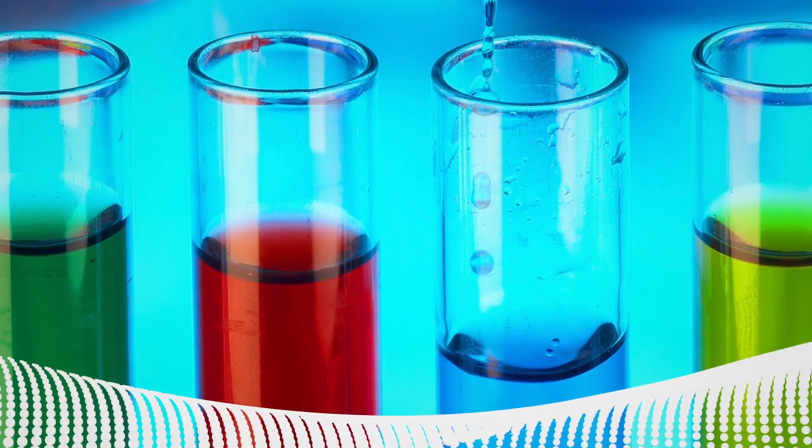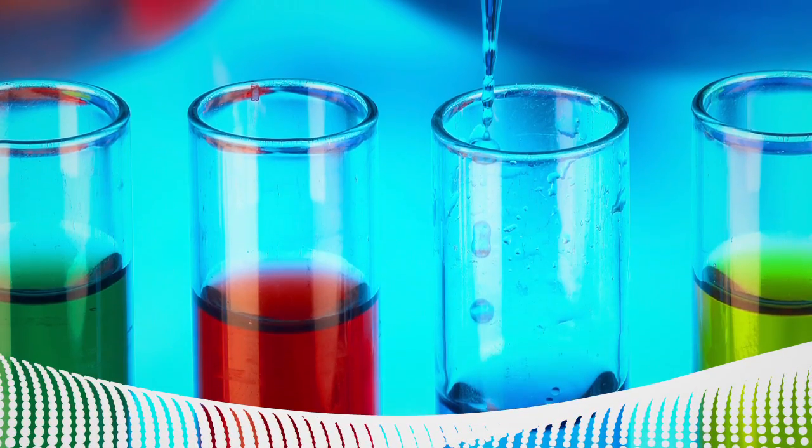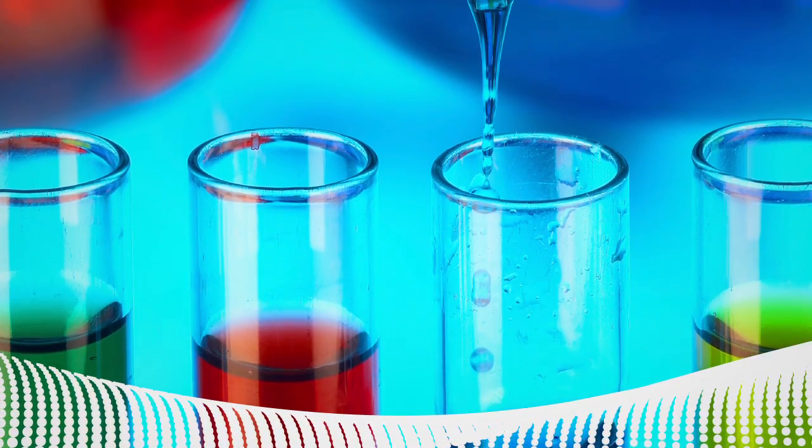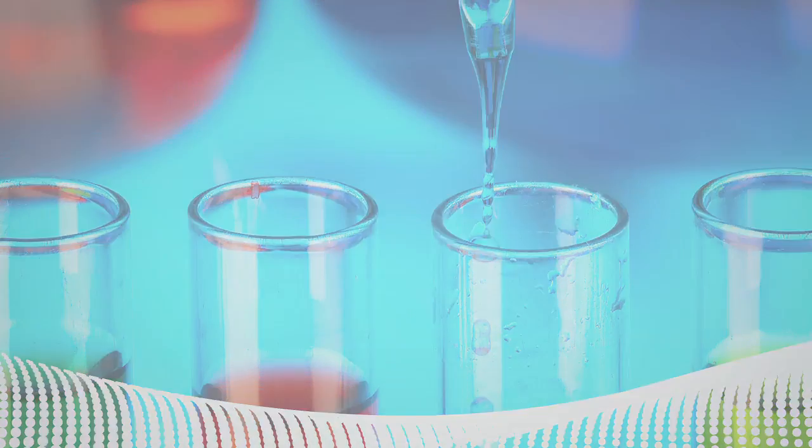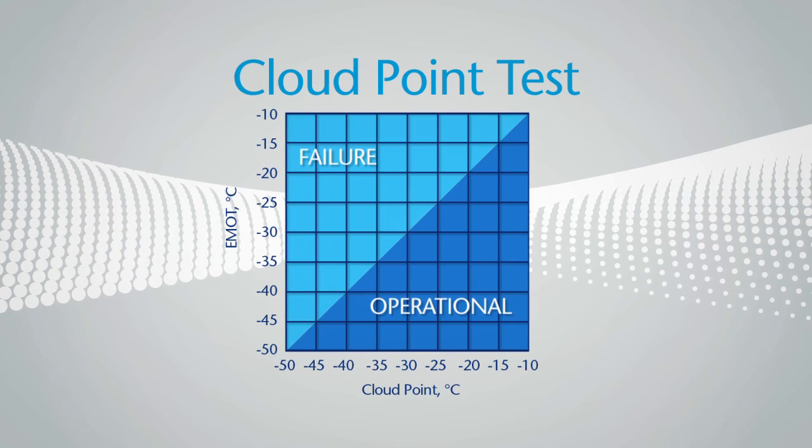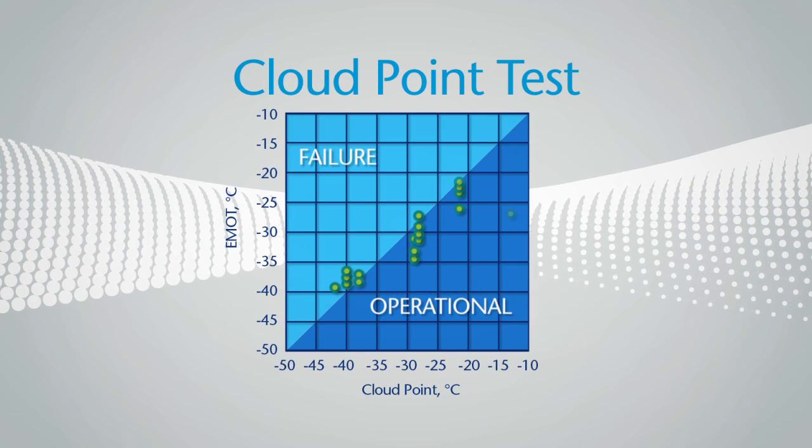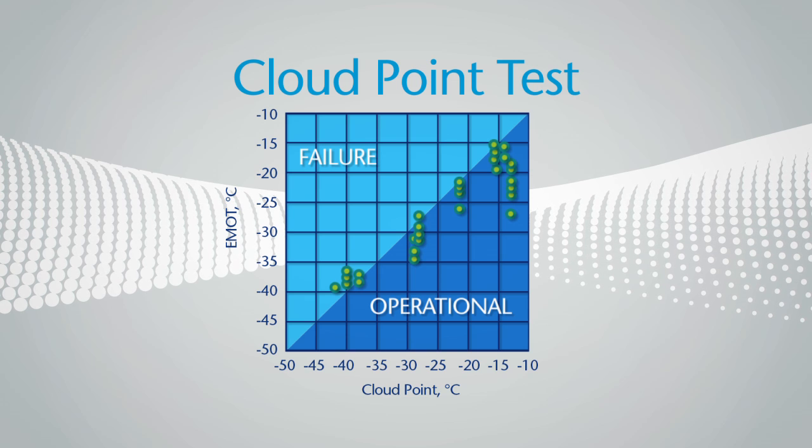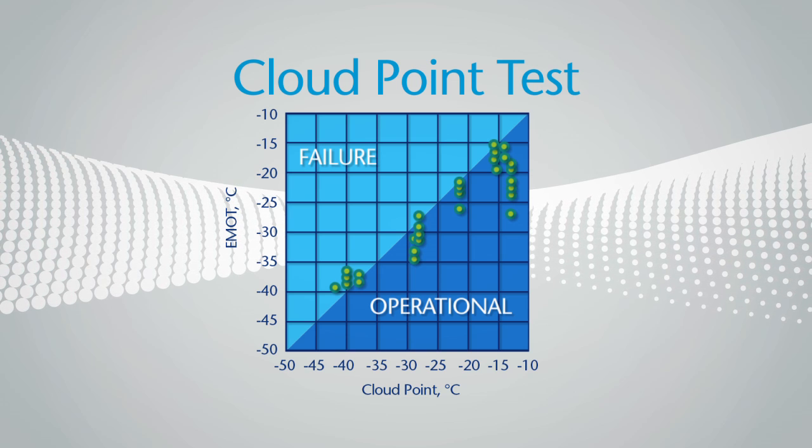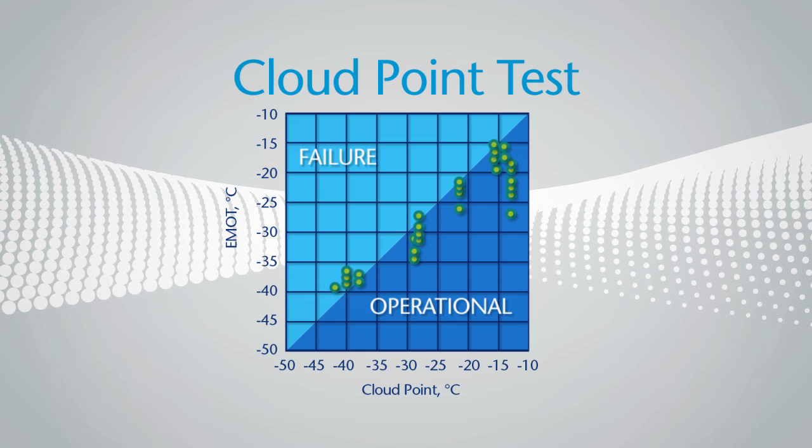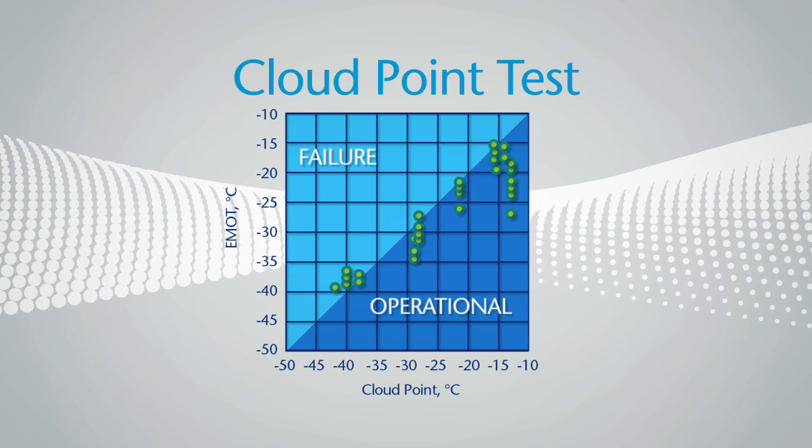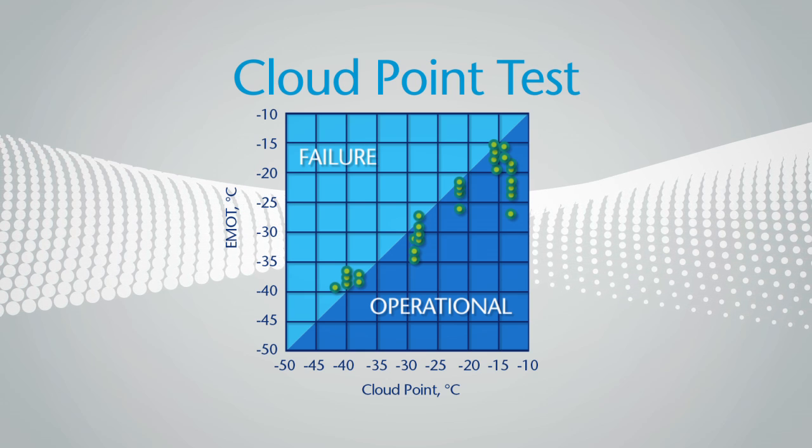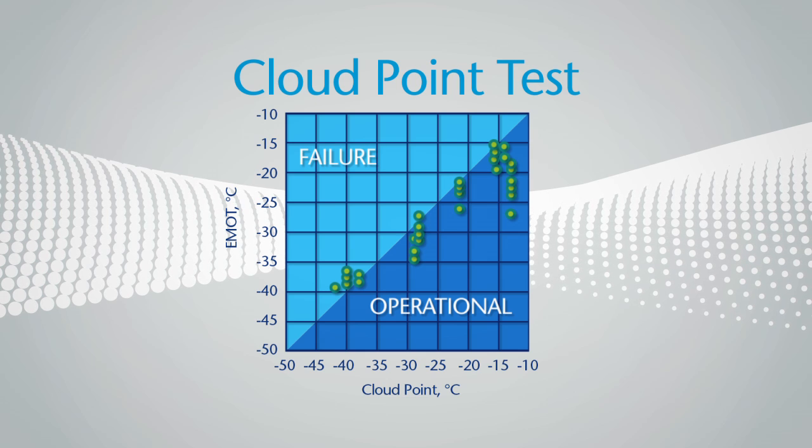Different laboratory bench tests are used to predict a fuel's operability performance under low temperature conditions. The cloud point test measures the temperature at which wax crystals first appear. But the amount of wax may not be sufficient to block a filter. It's a conservative estimate, and you may be giving away low temperature performance when you're targeting cloud point.